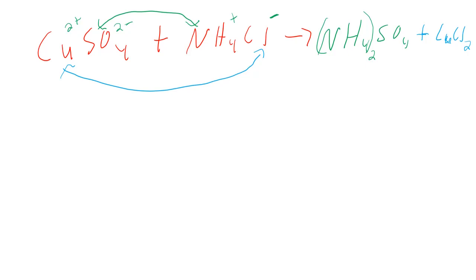Now what I have to do is balance my equation. If I look at this, I have one copper and one sulfate on each side, so that's fine. But I have one ammonia and one chlorine on the reactant side and two ammonias and two chlorines on the product side. So if I put a two here, that will balance this equation because I will now have two ammonias and two chlorines.